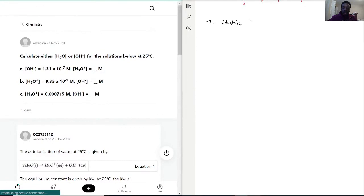We have problem A with OH- of 1.31 times 10 to the negative 7 molarity. Problem B we have H3O+ of 9.35 times 10 to the negative 9, these are all molarity.